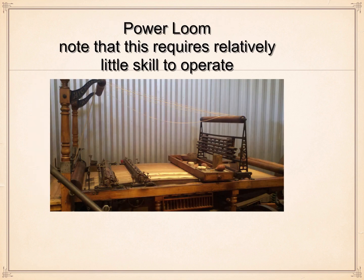Let's go to the next one, the power loom — one of my favorites. You can see that this device requires very little skill to operate. Prior to the Industrial Revolution, objects and products were made by skilled craftsmen who took years to practice, so their labor cost a lot of money because you're paying somebody for their skill. But anybody could operate this power loom. You don't need years of training or practice; you don't have to be an artisan. All you have to do is pull a few gears and it basically operates itself. That means you can hire unskilled labor at a lower cost.